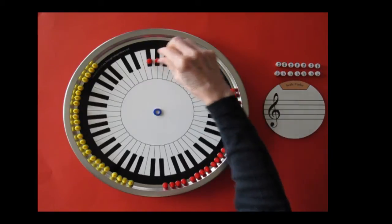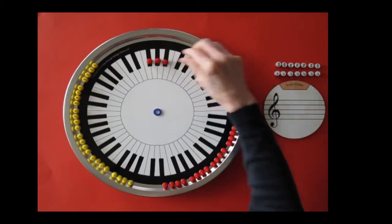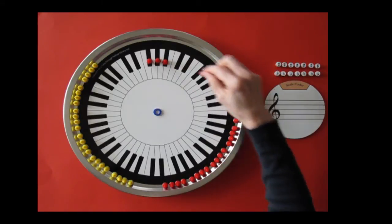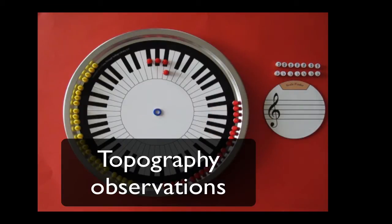Whole-step, another whole-step, and a half-step. The topography of this tetrachord is black, black, black, white.